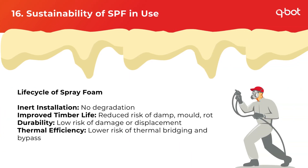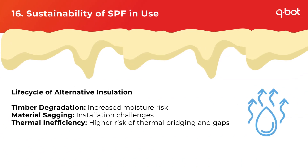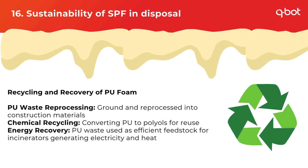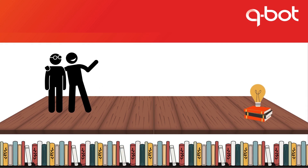The life cycle of spray foam includes no degradation and improved timber life, durability and thermal efficiency. Alternative insulation life cycles include timber degradation, material sagging, and thermal insufficiency due to thermal bridging and gaps. Spray foam is both recyclable and recoverable — it can be ground and reprocessed into construction materials, chemically recycled by converting to polyols for reuse, and used in energy recovery as PU waste can be a feedstock for incinerators generating electricity and heat. Thanks for watching. We hoped you learned some valuable insight into the space below homes.